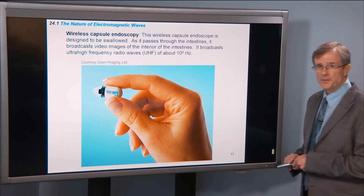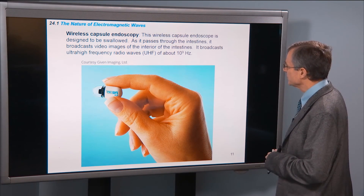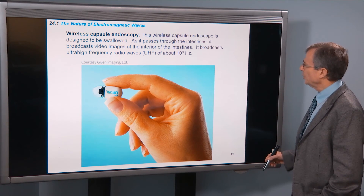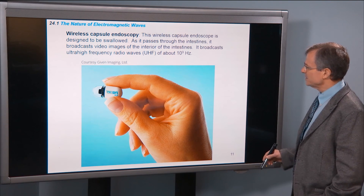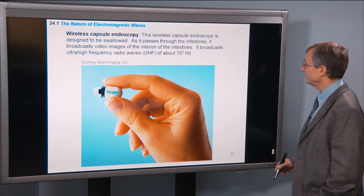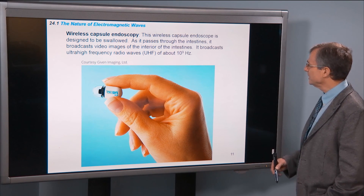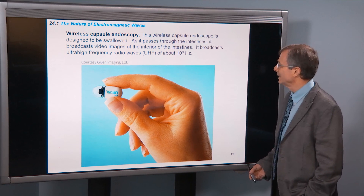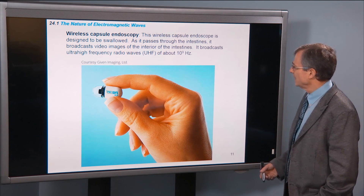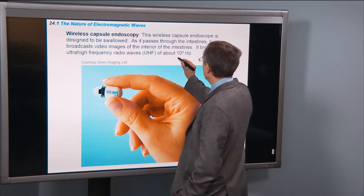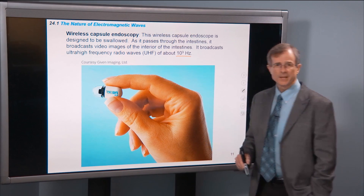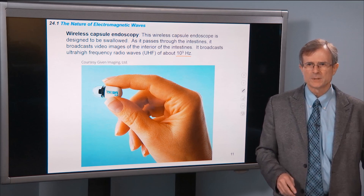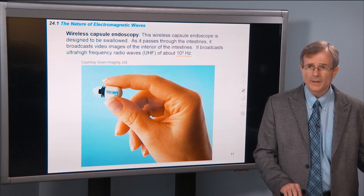Another application is wireless capsule endoscopy. This wireless capsule endoscope is designed to be swallowed. As it passes through the intestines, it broadcasts video images of the interior of the intestines using high-frequency waves at 10 to the 9 hertz, in the ultra-high frequency range.